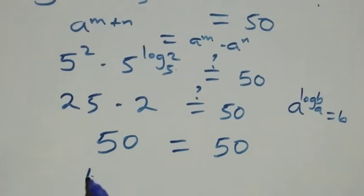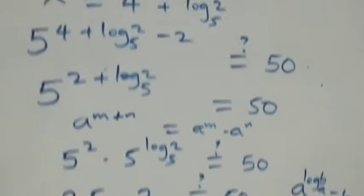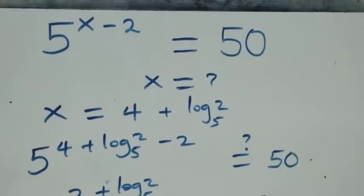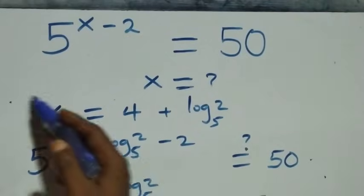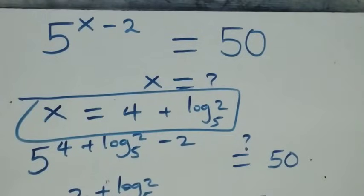We have the left-hand side equals the right-hand side. Hence, we conclude that x equals 4 plus log 2 base 5 satisfies this given problem. Thank you for watching — don't forget to subscribe for more videos and turn the notification bell on. Share this video with a thumbs up and put your comments. See you next class, bye for now.